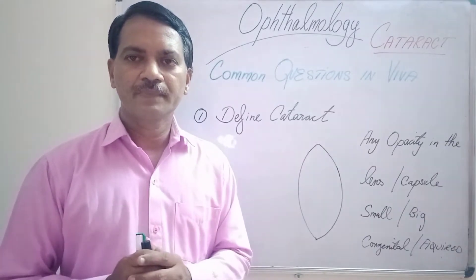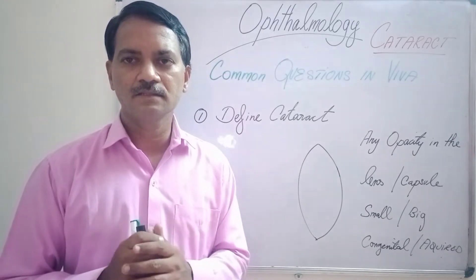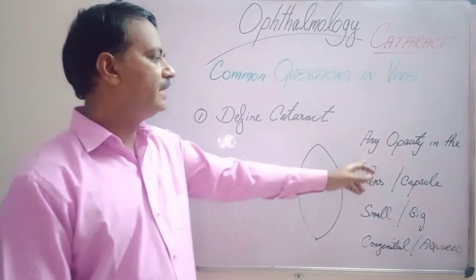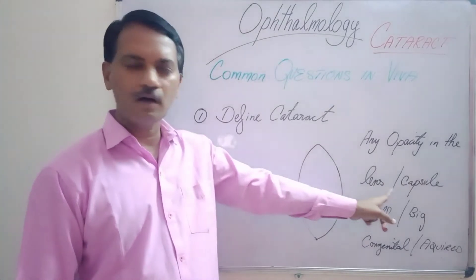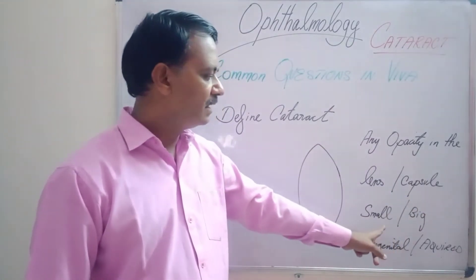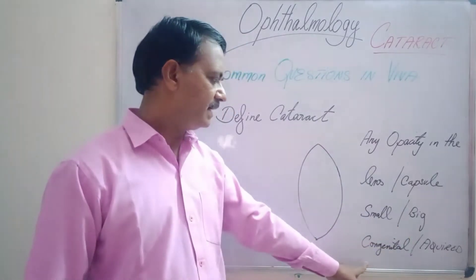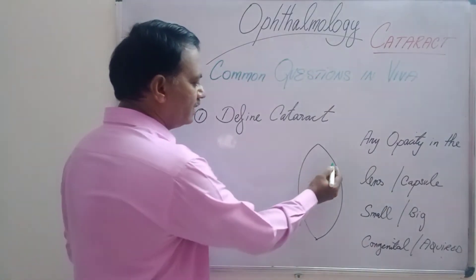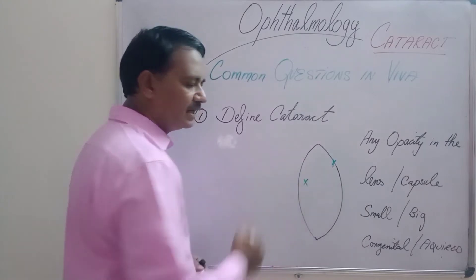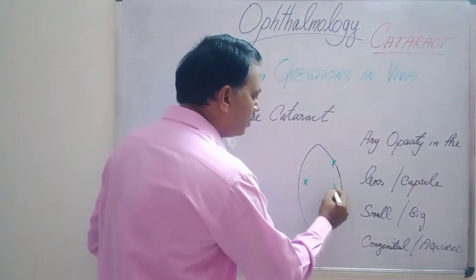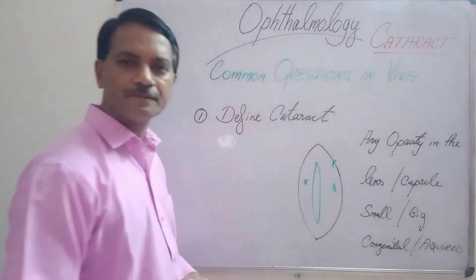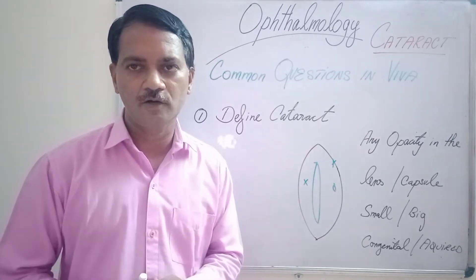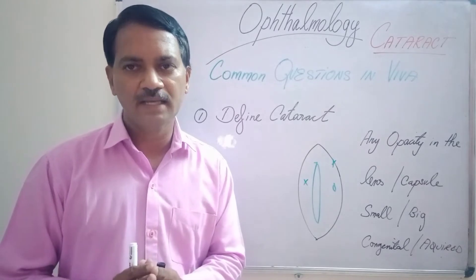The commonest question asked in the examination about cataract is the definition. Any opacity in the lens or the capsule of the lens — it may be small or big, it may be congenital or acquired — is called a cataract. The opacity can be affecting the capsule or it may be inside. It may be a small one or it may be a big opacity. It may be from birth or it may be acquired later on in life.